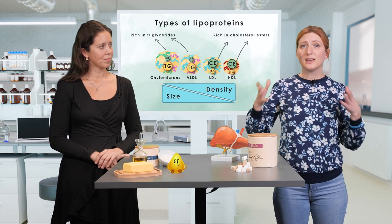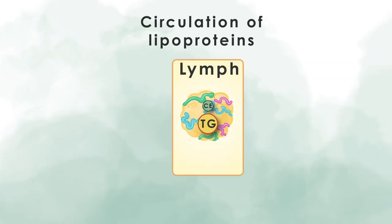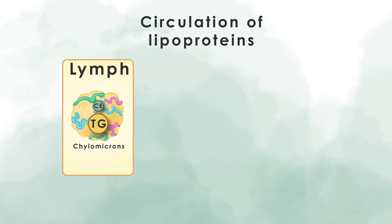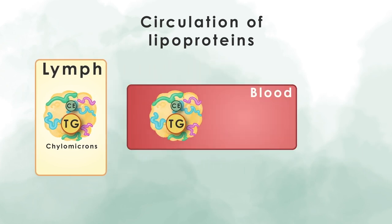Let's look at the circulation of lipoproteins in the body. After digestion, the first particles are released by the intestines into the lymph. They are called chylomicrons, and they are characterized by high triglyceride content. A protein found on the chylomicrons is apolipoprotein B. Through the lymphatic vessels, they enter the bloodstream and provide fatty acids to tissues like adipose tissue and muscle.